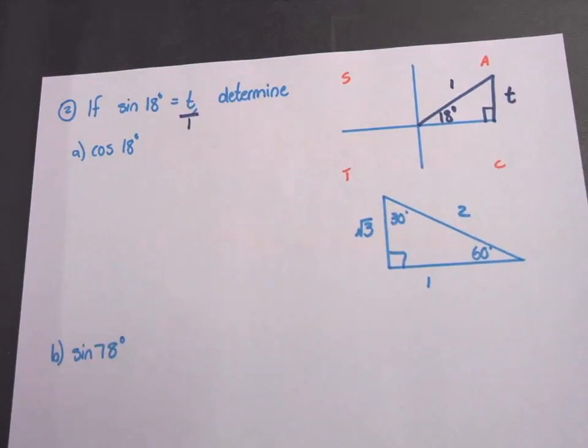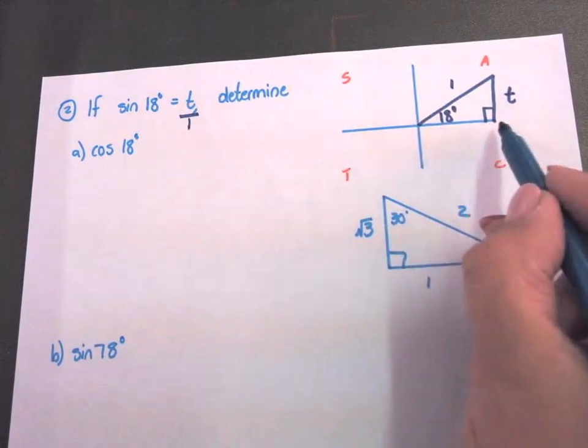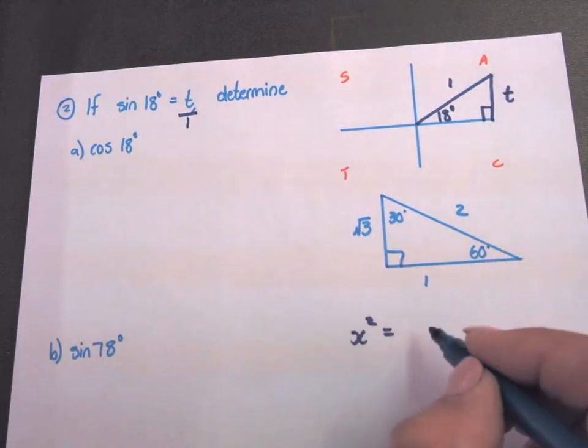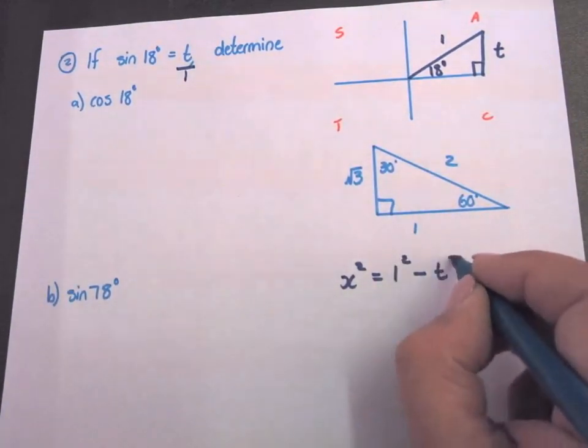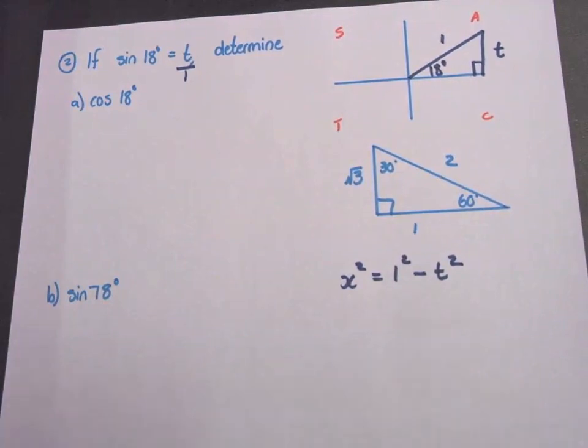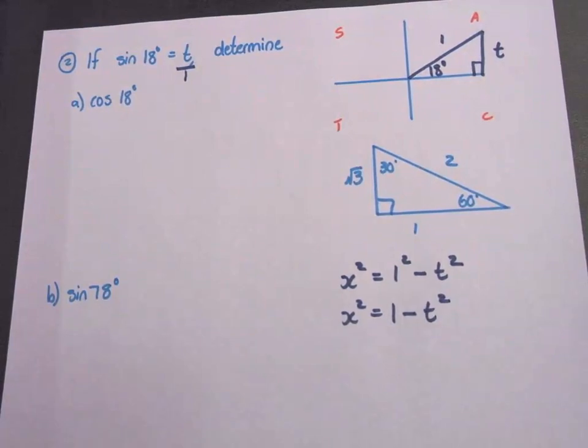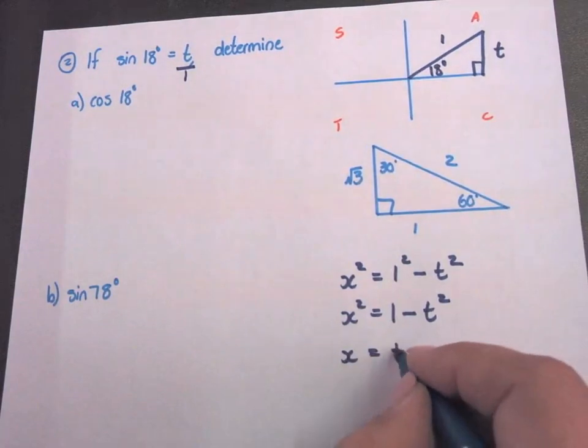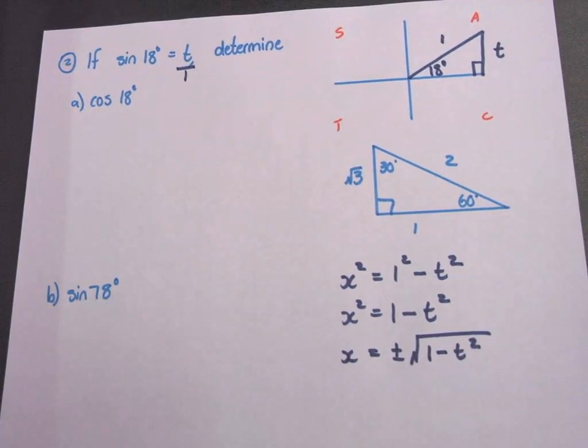I now have to work out the x distance of the triangle or the x length. So x squared equals 1 squared minus T squared. x squared equals 1 minus T squared. You get the square root on both sides. x equals plus or minus square root 1 minus T squared.